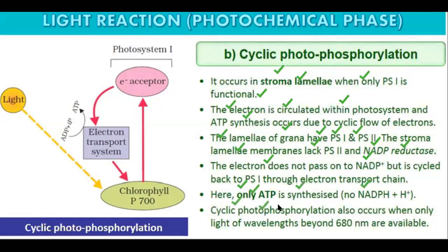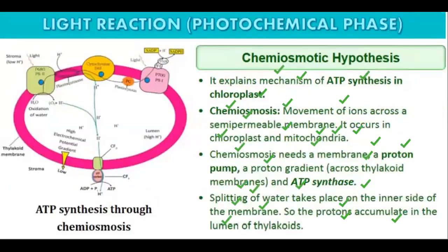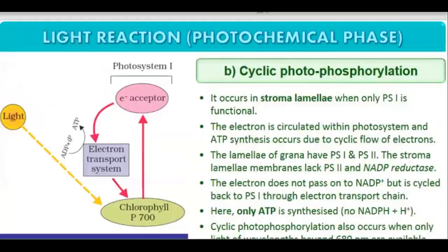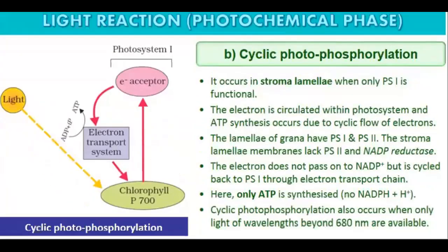Cyclic photophosphorylation also occurs when only light of wavelengths beyond 680 nm is available. In that condition, PS2 does not work and NADP reductase also does not work, so only cyclic photophosphorylation takes place.